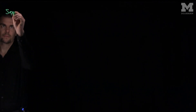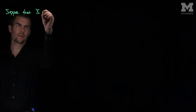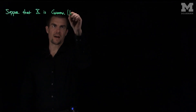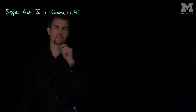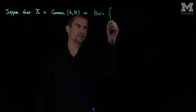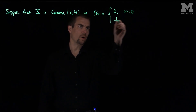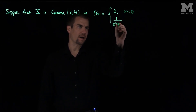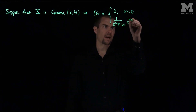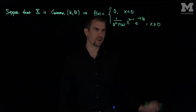Let's suppose that x is gamma distributed with parameters k and theta, which implies that the PDF is zero if x is less than zero, and it's one over theta to the k, gamma(k), x to the k minus one, e to the negative x over theta, if x is greater than or equal to zero.